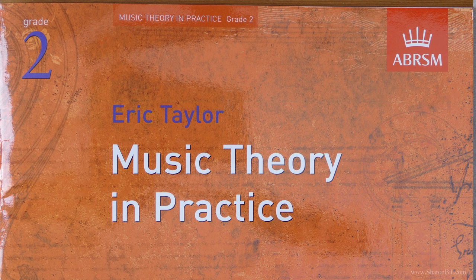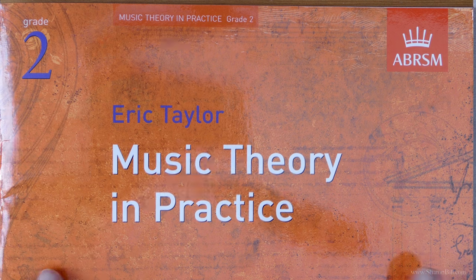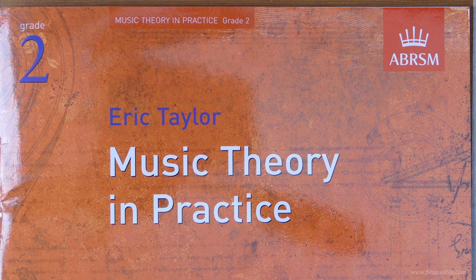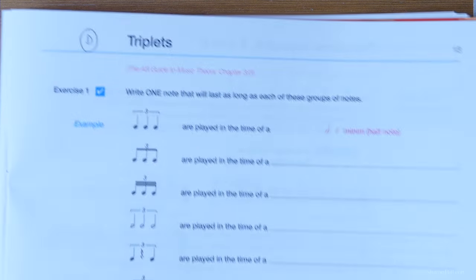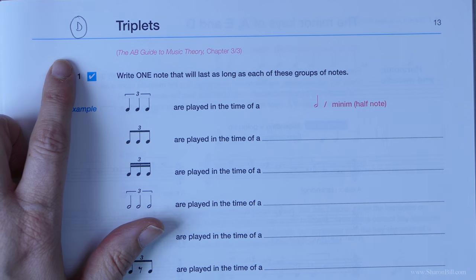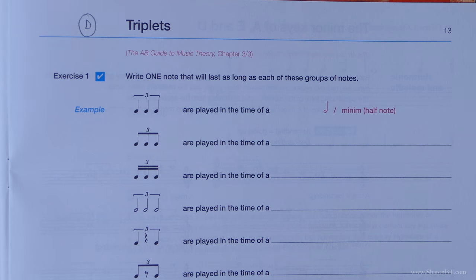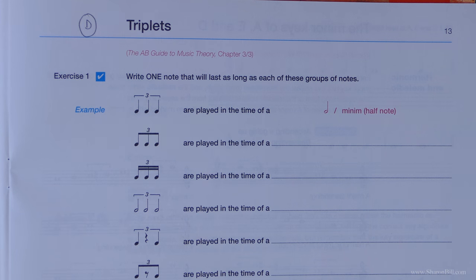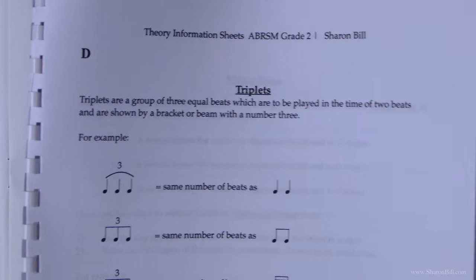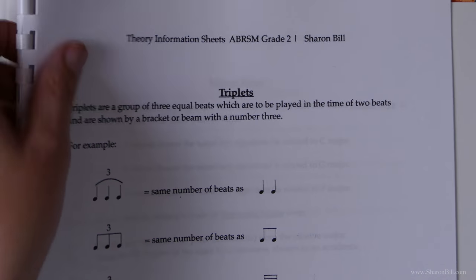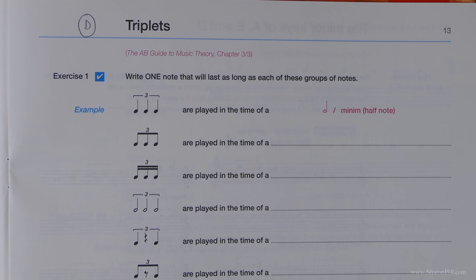If you can give me a like that'd be fab and subscribe to the channel to keep updated. So let's crack on working through Grade 2. If you turn in your workbook to page 13, we're on the subject of triplets. I've referred to this as section D so that you know to turn in your PDF information booklet to section D with all the information there.